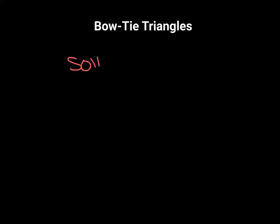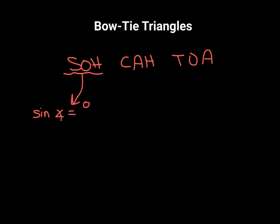Thinking back to geometry, we have some rules when dealing with right triangles that relate our sides and angles to each other. There was a word we used: SOHCAHTOA. You could write that at the top of page 11. What this means is: sine of our angle is equal to opposite over hypotenuse — S, O, H. Sine equals opposite over hypotenuse.